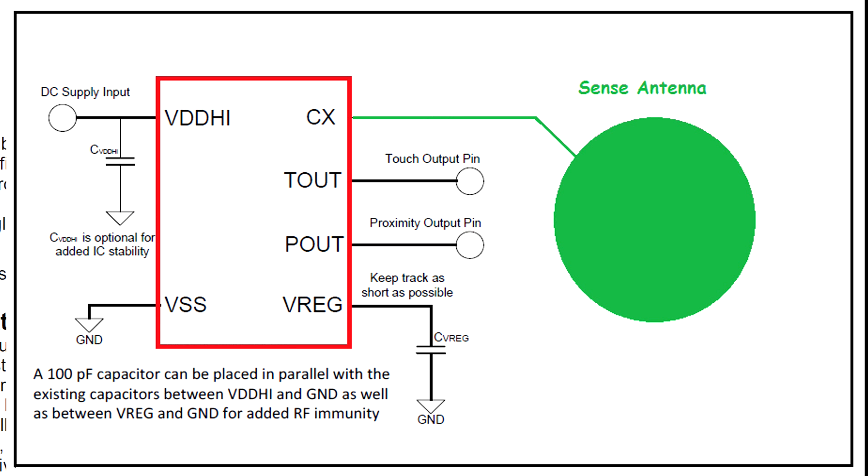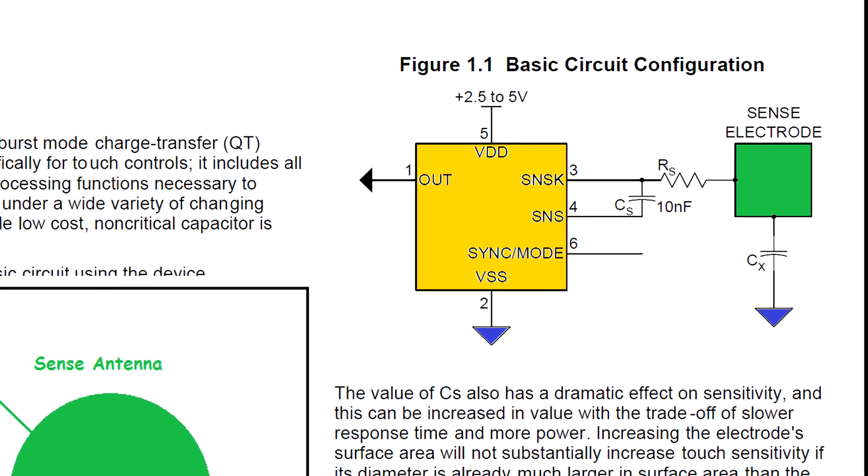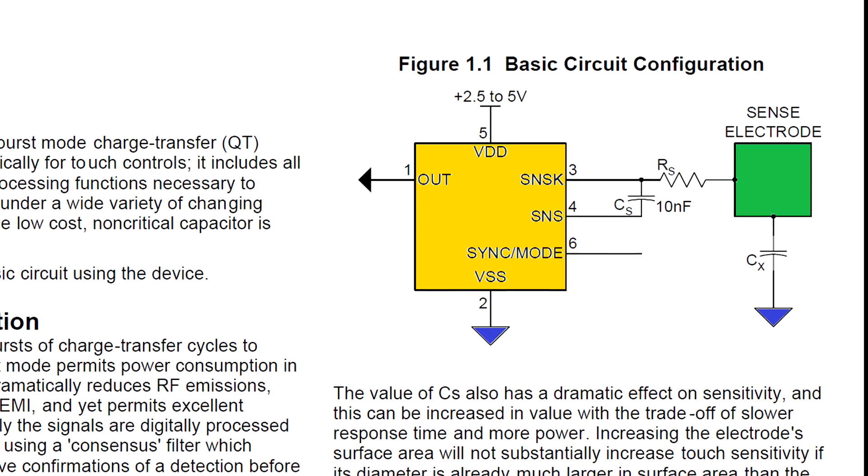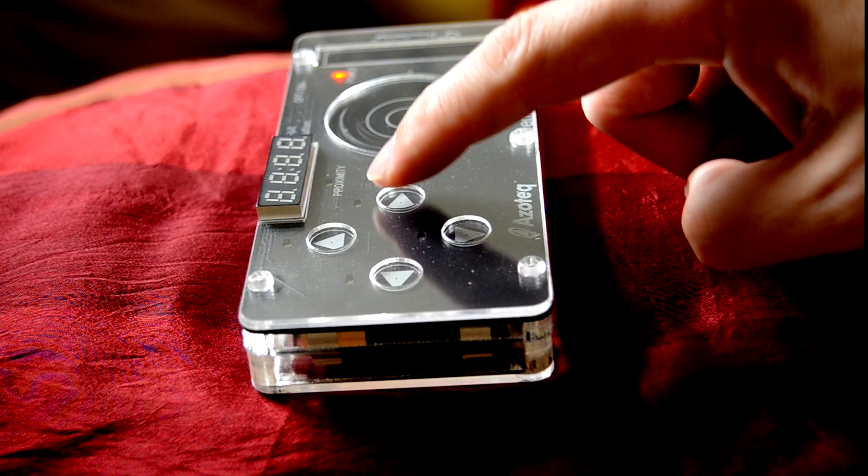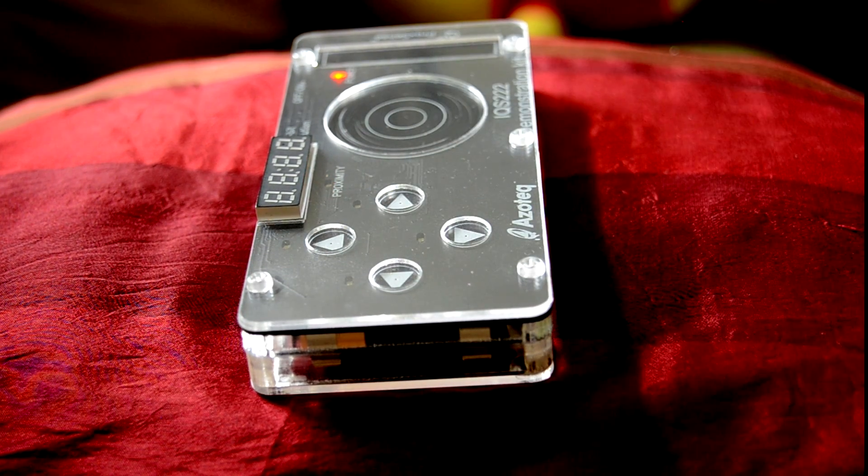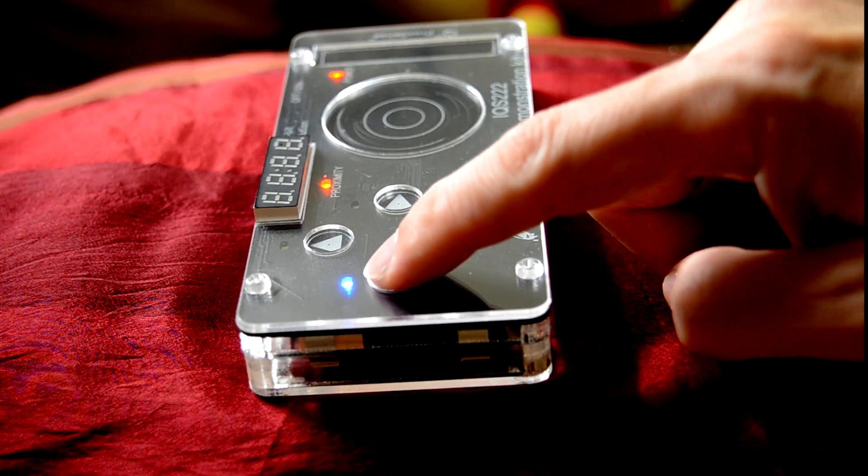Roughly speaking, a capacitive sensor comprises electronic circuits that measure capacitance across electrodes, also known as antennas. When the capacitance changes, the circuit and the algorithm infer the presence of an external object.